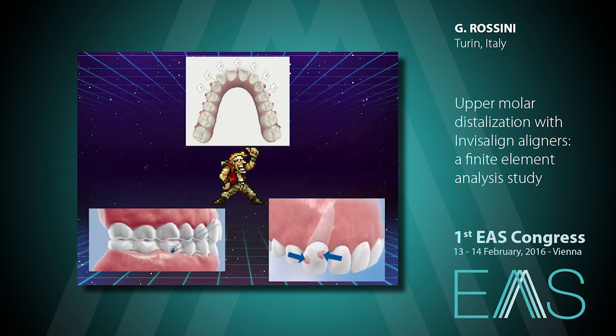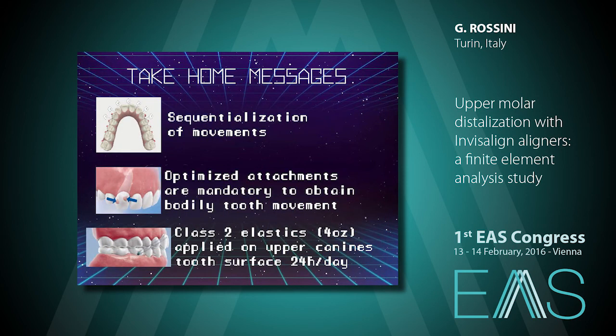So the answer to our questions — whether it is mandatory to sequentialize movement, to adopt elastics and attachments — is yes. Our take-home message is that sequentialization of movements is the best way to perform this treatment; optimized attachments are mandatory to obtain bodily tooth movement, especially with upper premolars; and Class II elastics simulated at four ounces represent the best combination and should be applied on upper canines directly on tooth surfaces 24 hours a day to increase the efficiency of movement and anchorage control.